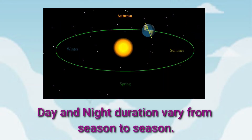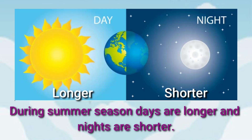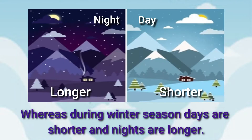Day and night duration vary from season to season. During summer season, days are longer and the nights are shorter. Whereas during winter season, days are shorter and the nights are longer.